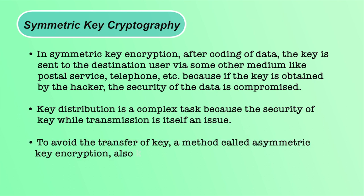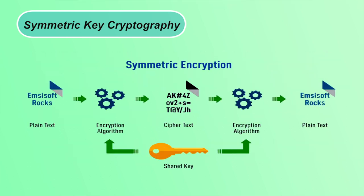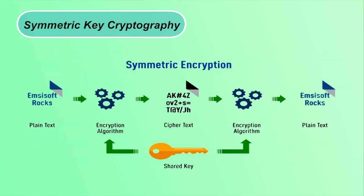In symmetric key encryption, after encoding the data, the key is sent to the destination user via some other medium like postal service or telephone, because if the key is obtained by a hacker, the security of the data is compromised. Key distribution is a complex task because the security of the key during transmission is itself an issue. To avoid the transfer of the key, a method called asymmetric key encryption, also known as public key encryption, is used. At the sender side, plain text is encrypted using a shared secret key and converted to ciphertext, which is then decrypted at the receiver side using the same shared secret key.